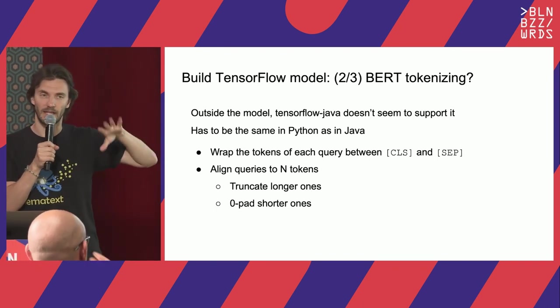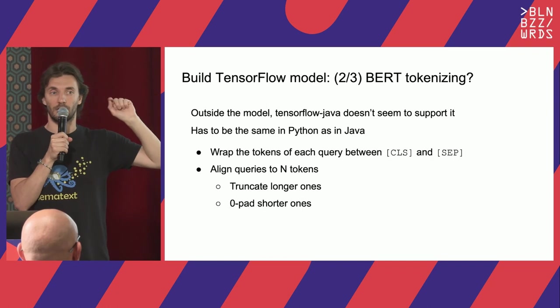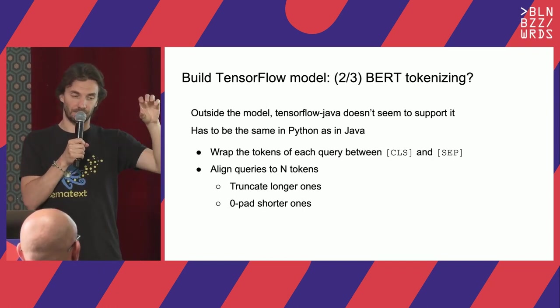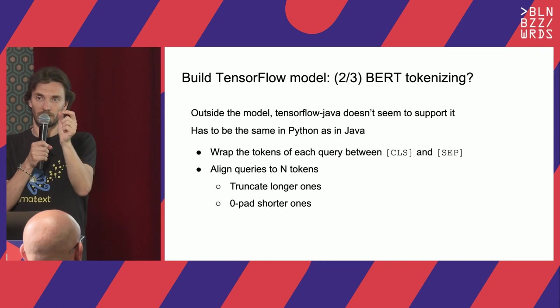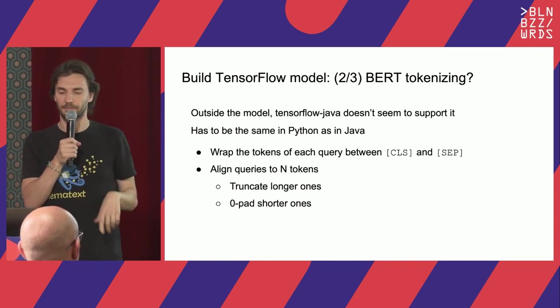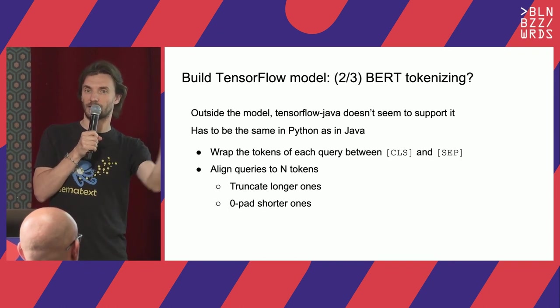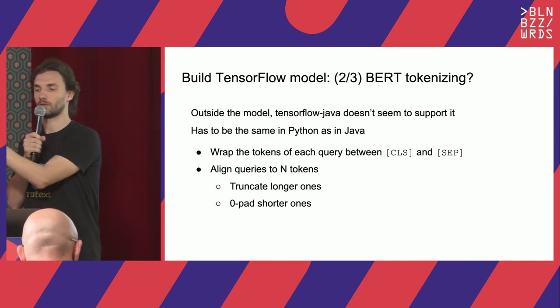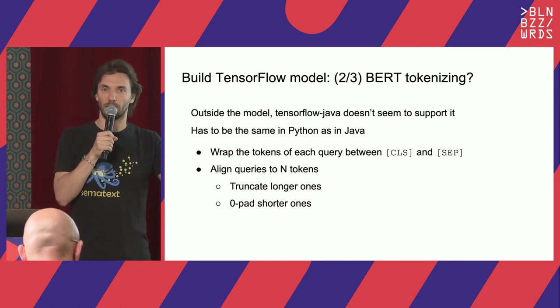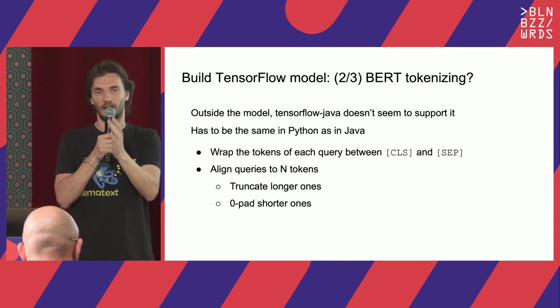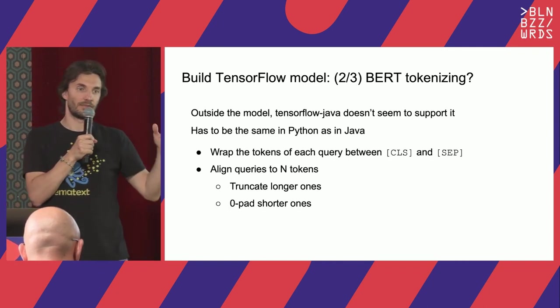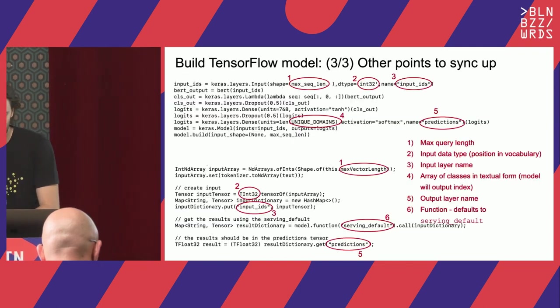Once all the stars are aligned, we build a model. For the BERT tokenization that happens outside the model, two things to remember: each query is tokenized against a vocabulary, outputting a list of integer token IDs. We prepend with CLS and end with SEP, so every query looks like CLS, token, token, SEP. We also need all queries to have the same length — if the query is longer than our max, we chop it off; if shorter, we append zeros.